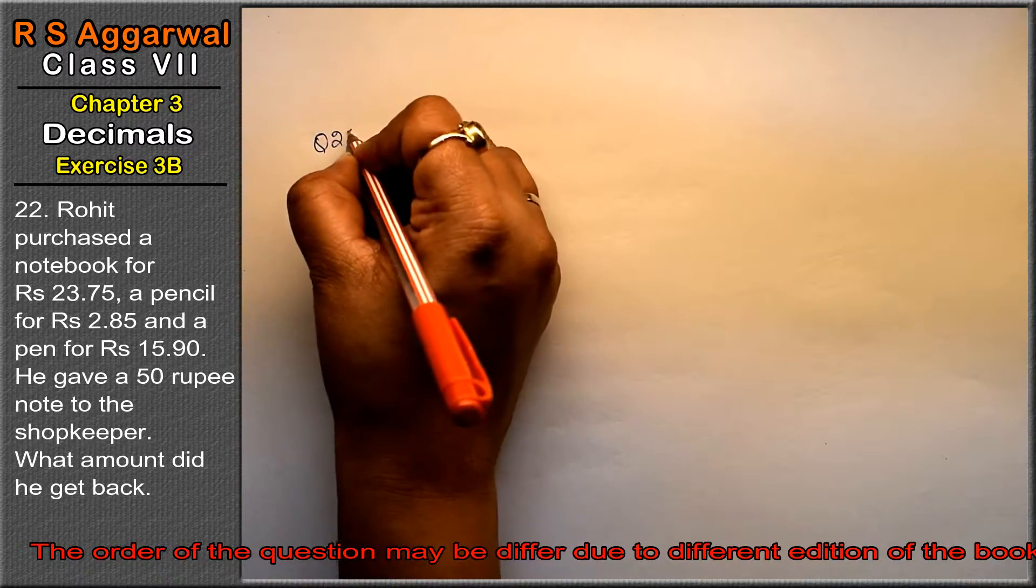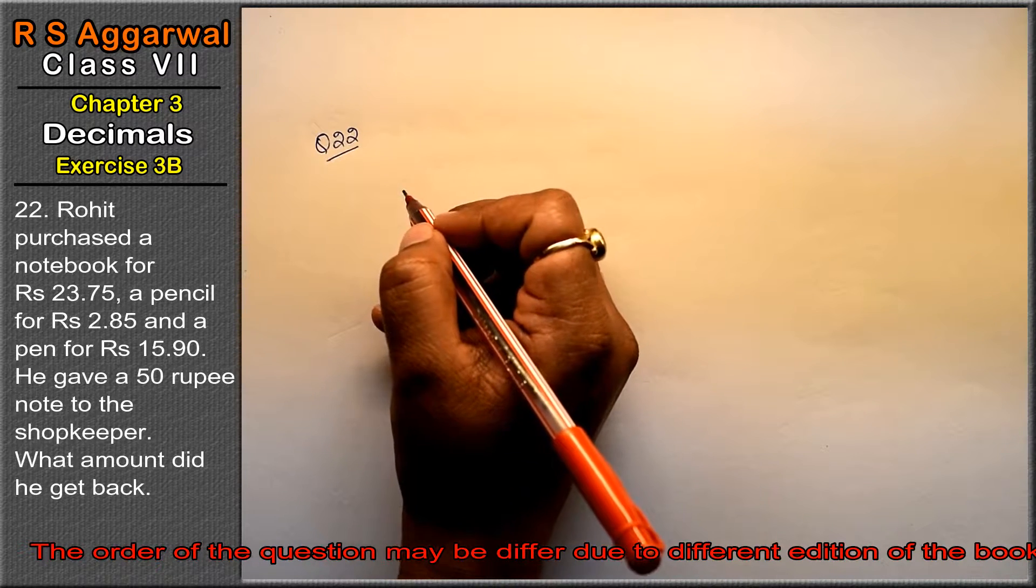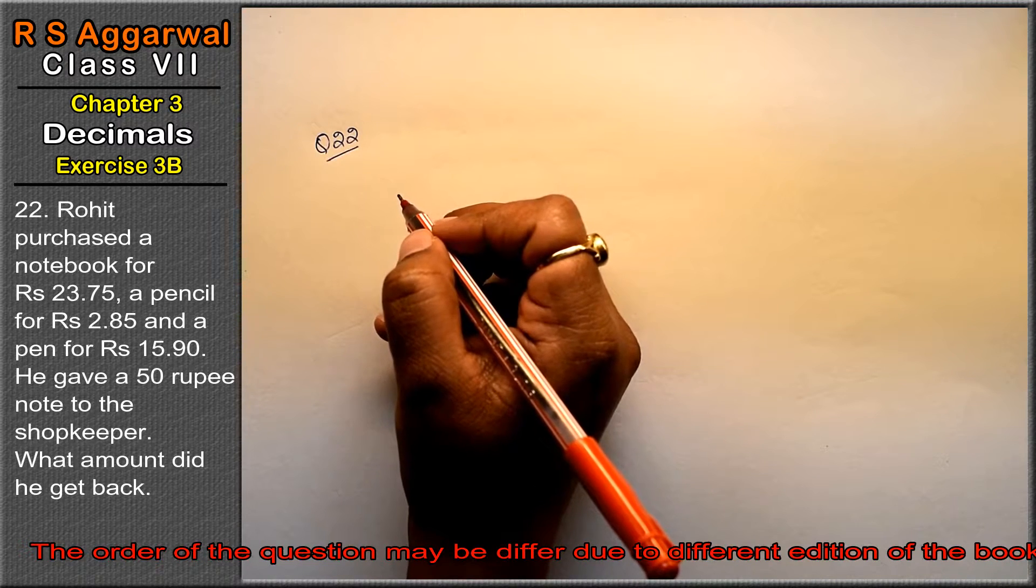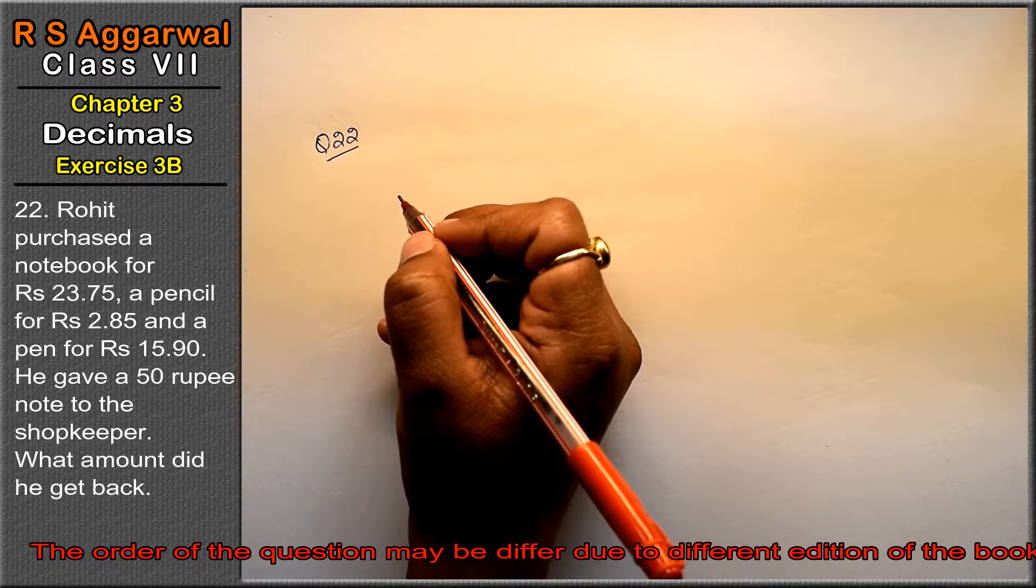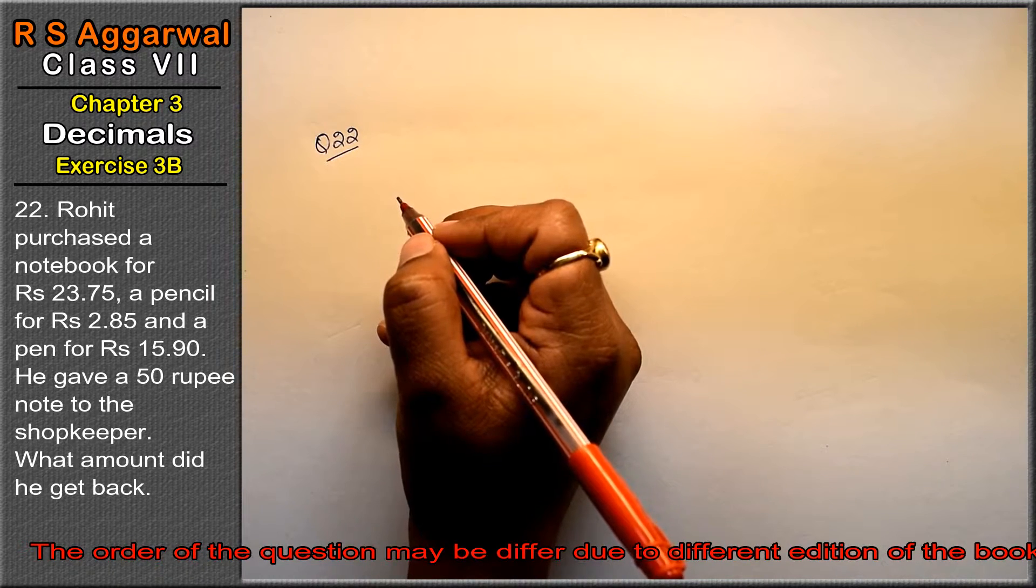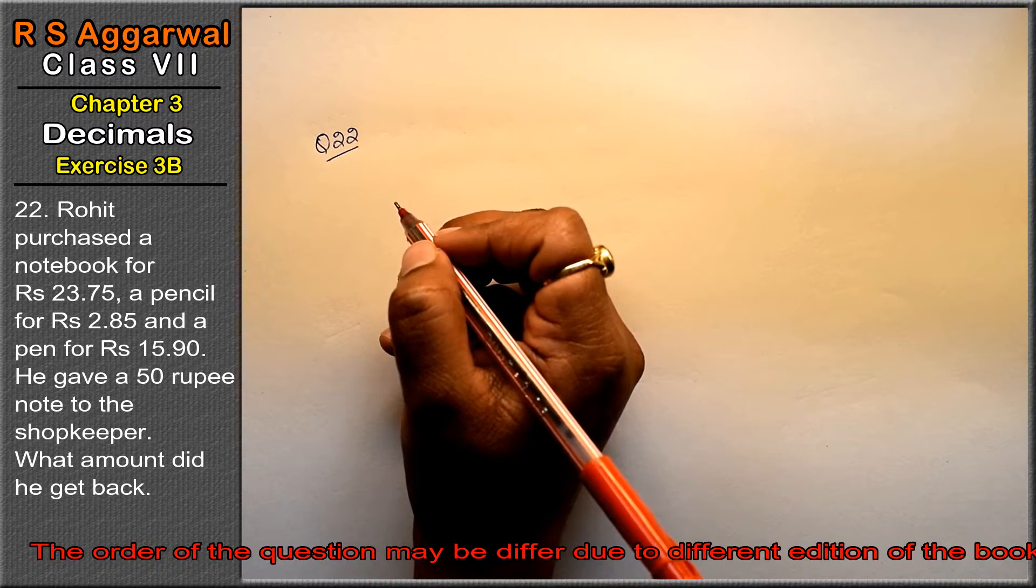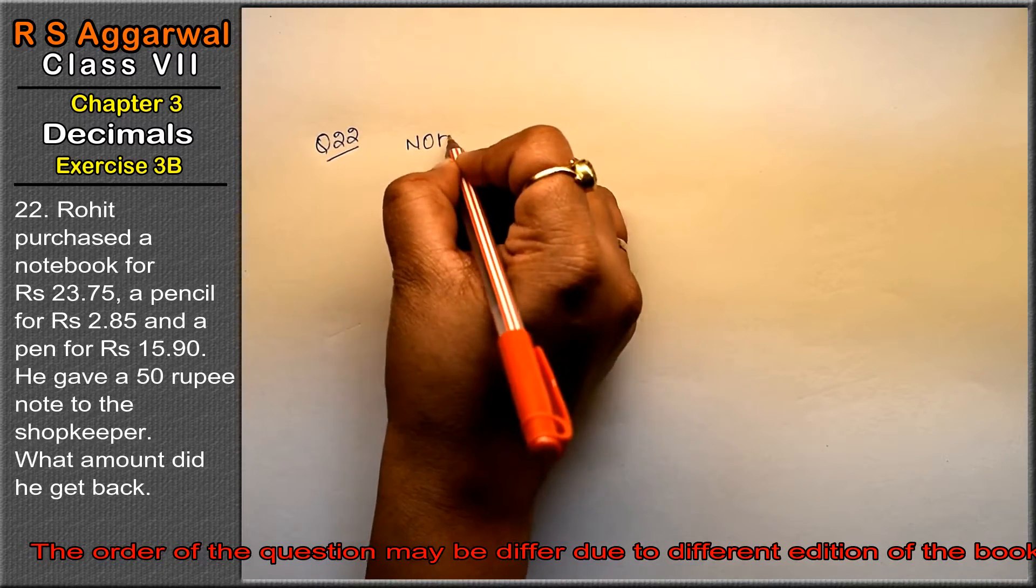Let's do question number 22 of exercise 3B, that is decimals. Question number 22 is: Rohit purchased a notebook for Rs. 23.75, a pencil for Rs. 2.85, and a pen for Rs. 15.90. He gave a 50 rupee note to the shopkeeper. What amount did he get back? Friends, he is saying Rohit has purchased a notebook, a pencil, and a pen. After that, he gave 50 rupees to the shopkeeper. How much did he return?